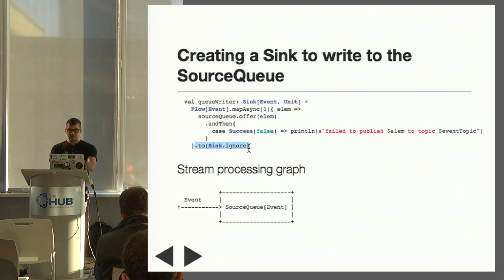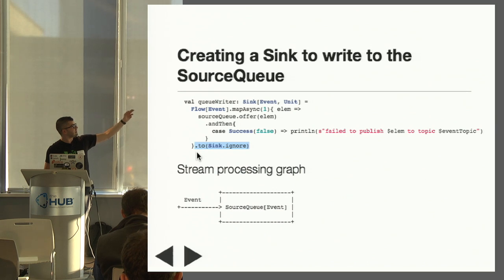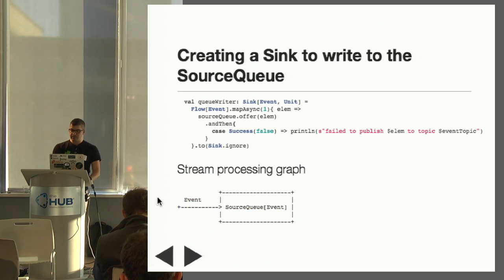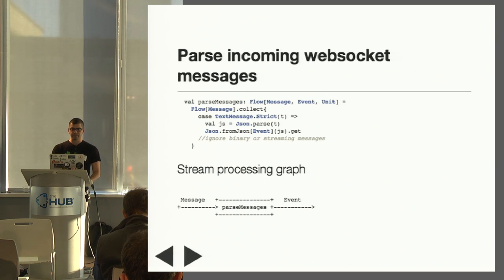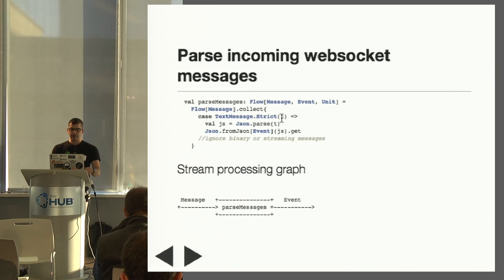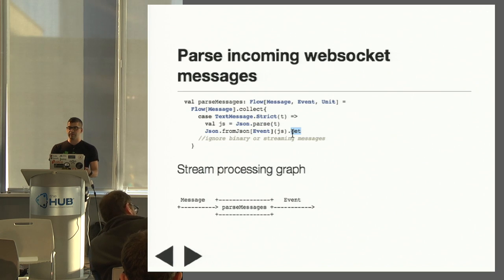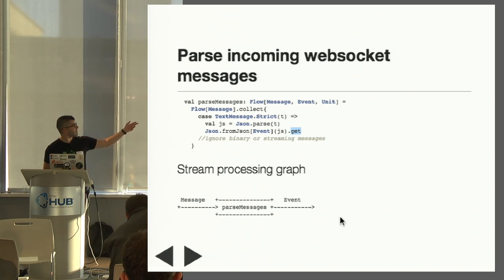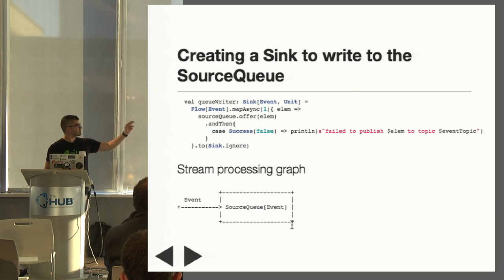We take that mapAsync — currently a flow — and connect it to a sink that just ignores any incoming elements, because we don't really care about the Boolean values except in that they indicate a message was not added to the buffer. So at this point, we've created a sink that consumes elements of type event. Next, we need to parse messages that arrive via WebSocket. For that, we have a flow of Message — that's the representation of WebSocket messages. It can be binary or text, and in both cases they can be strict or streaming. We're just interested in strict text messages, and for anything else we've chosen to ignore them. Parse messages uses the JSON parser to turn these text messages into events — it'll throw an exception if parsing fails. This graph component is a flow from Message to Event.